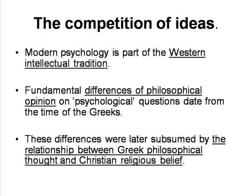Modern psychology emerged as part of the Western intellectual tradition and as such has been impacted by deep-rooted philosophical divisions. These divisions are evident in Greek philosophy, with fundamentally different understandings of the nature of being and of the means by which human beings come to understand the world in which they live — that is, questions of ontology and epistemology. These philosophical differences were later subsumed under the complex and often antagonistic relationship which developed between Greek philosophy and the Christian religion, together the two basic elements in the Western tradition. Finally, the scientific revolution caused a further division in its critique of established tradition, including religion.